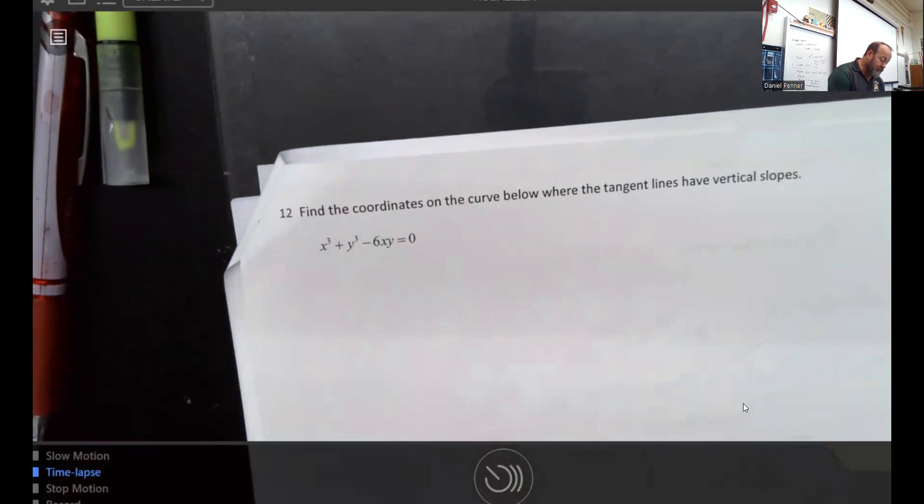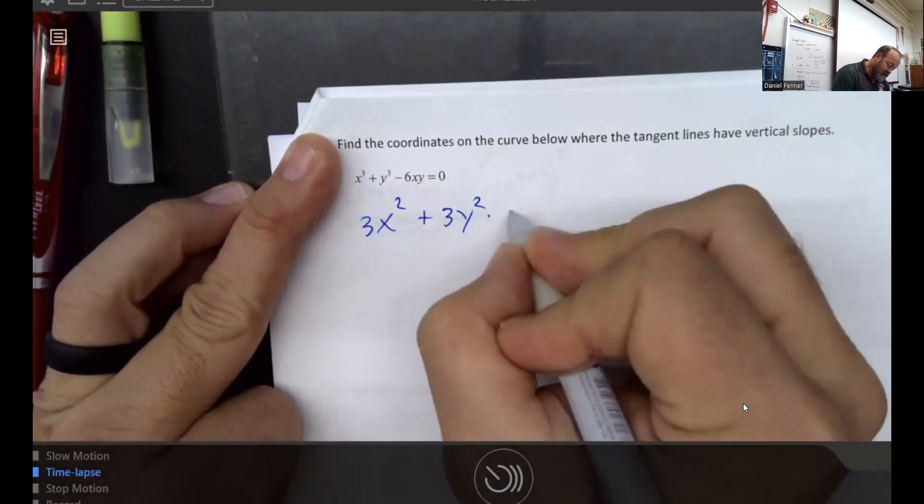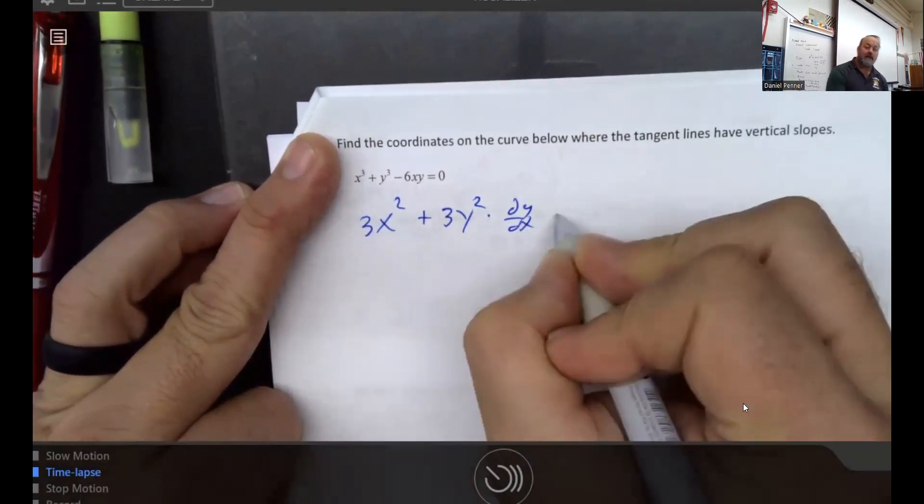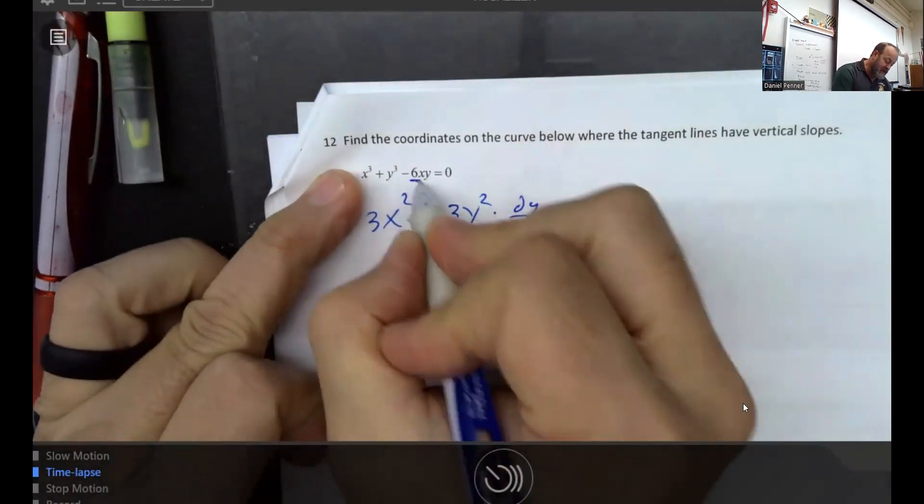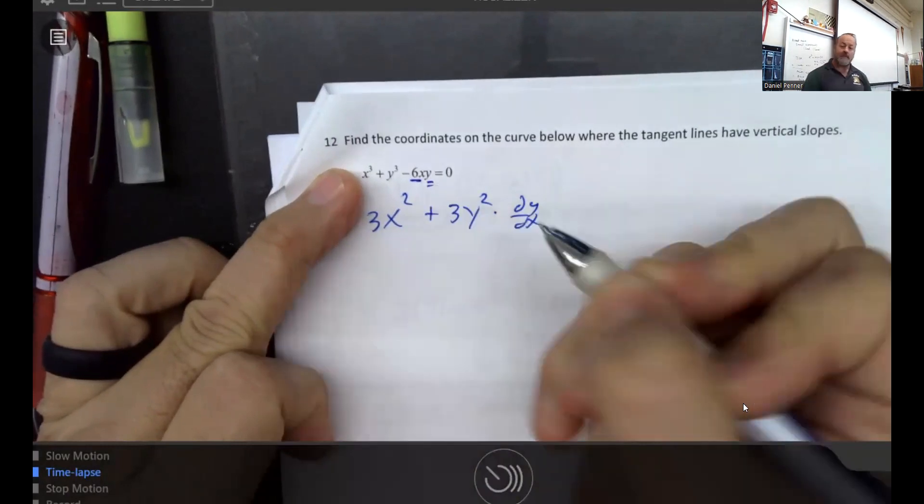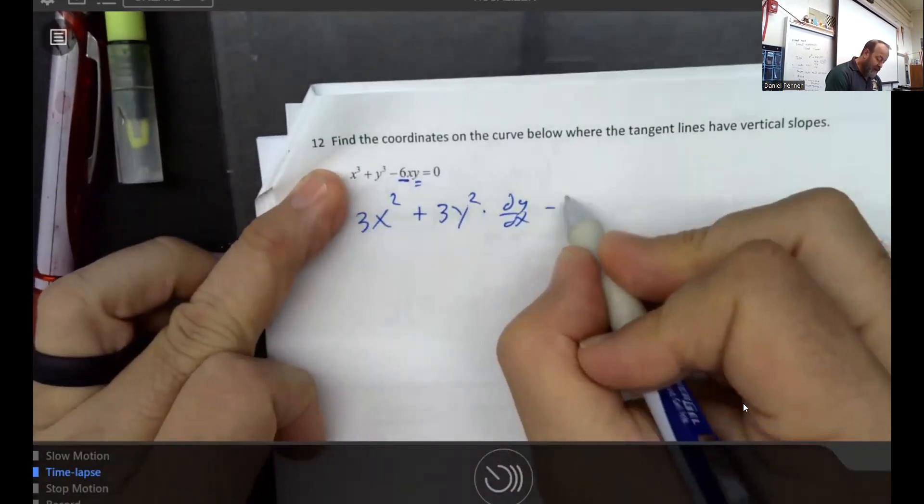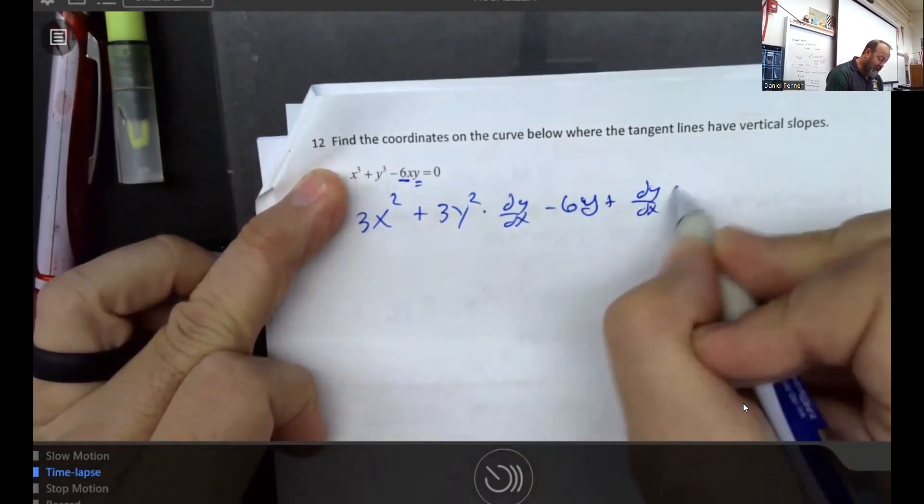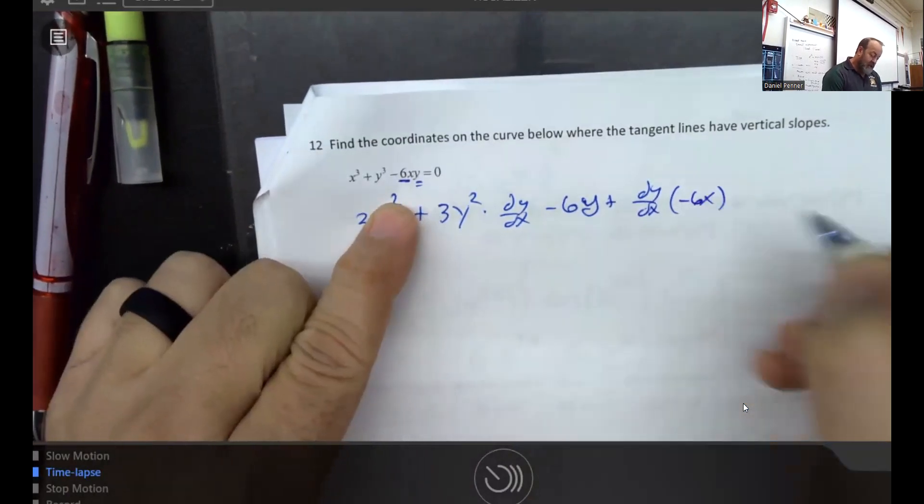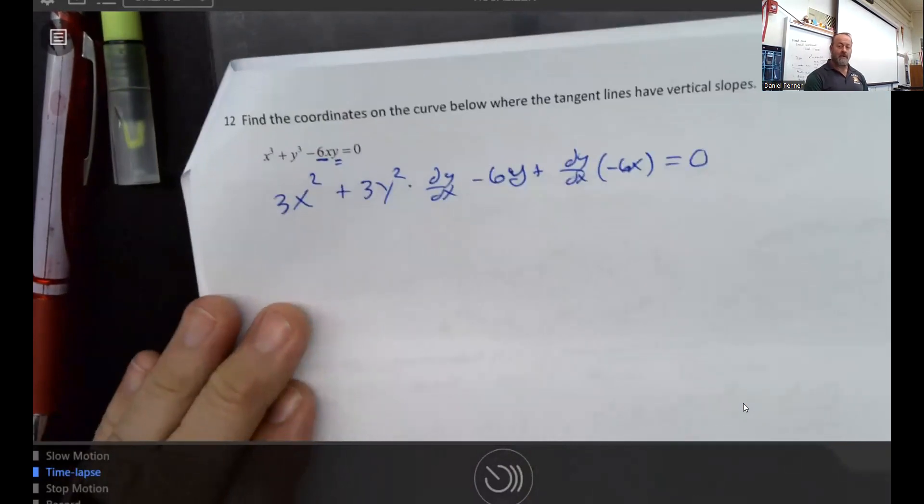So here we go. We're going to start with our implicit derivative, 3x² + 3y²(dy/dx). And now is where we got to be really careful. This is where the mistake is going to happen. Remember, I want to think of this -6x as f and that part as g. So I need to do f'g + g'f. And of course, the derivative of 0 is 0.